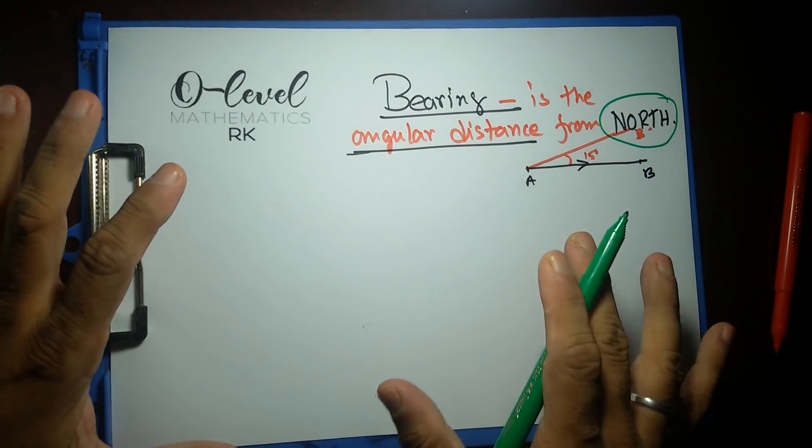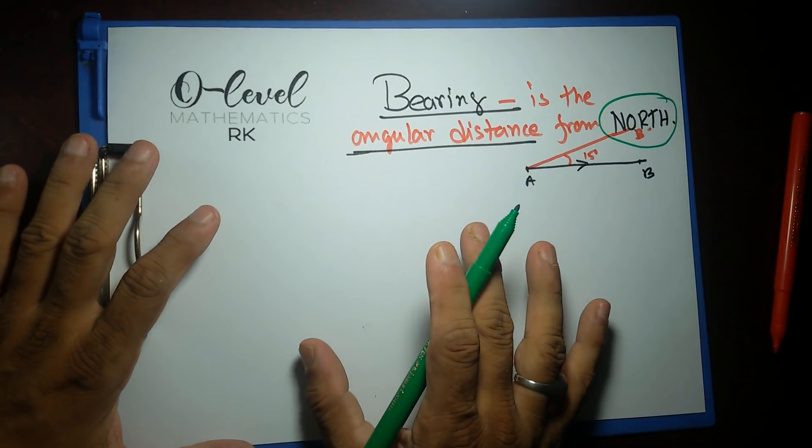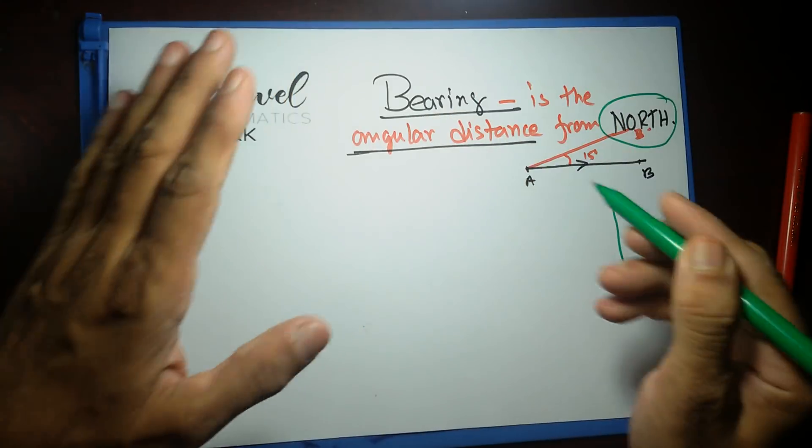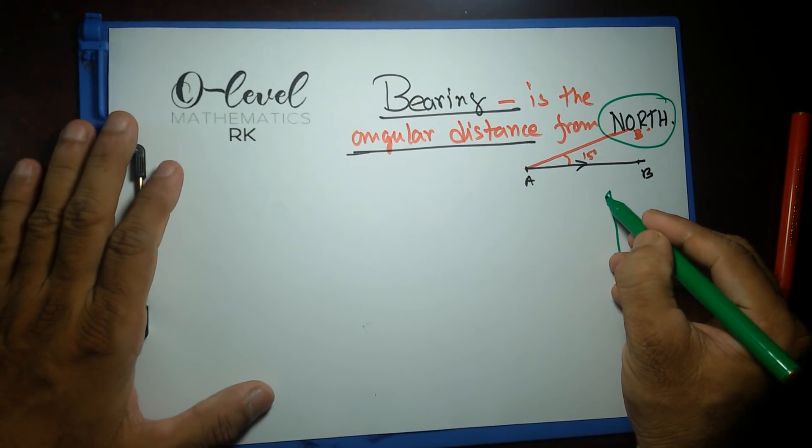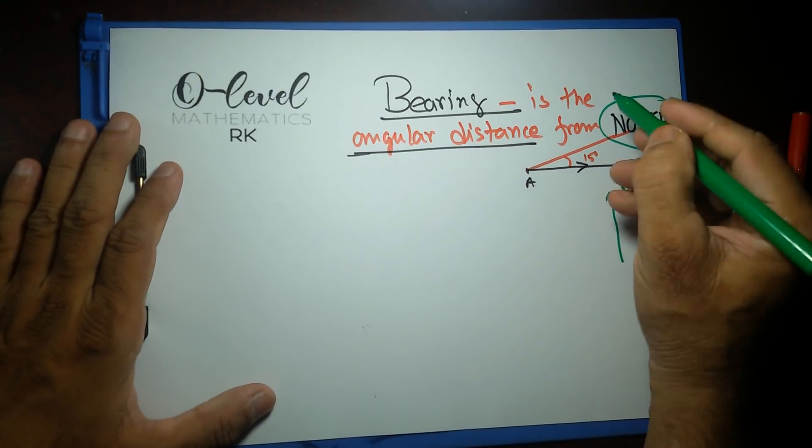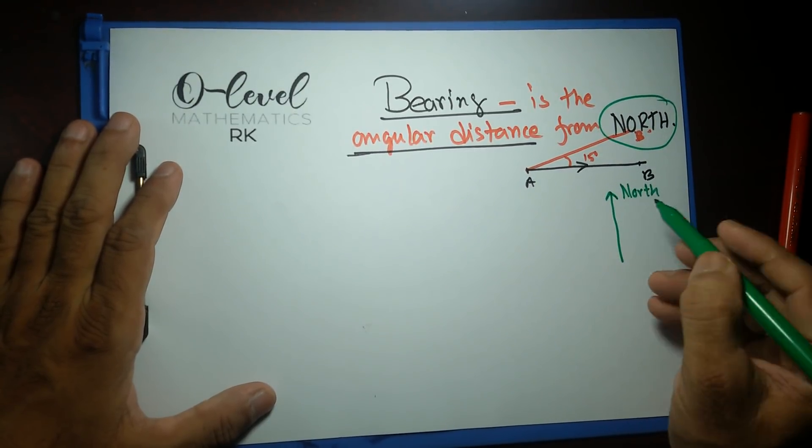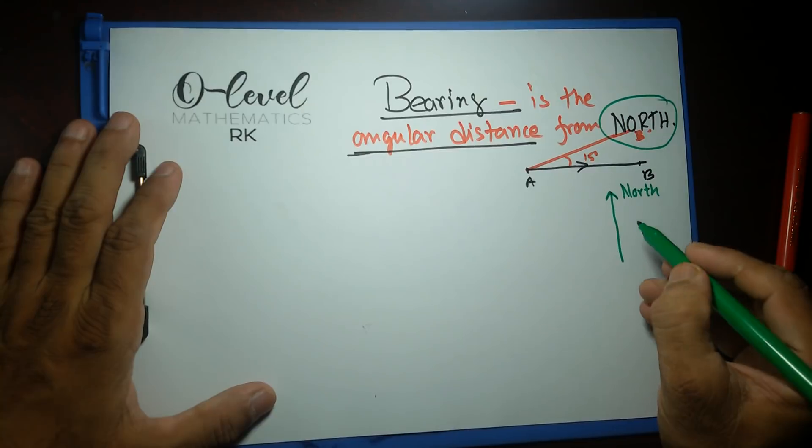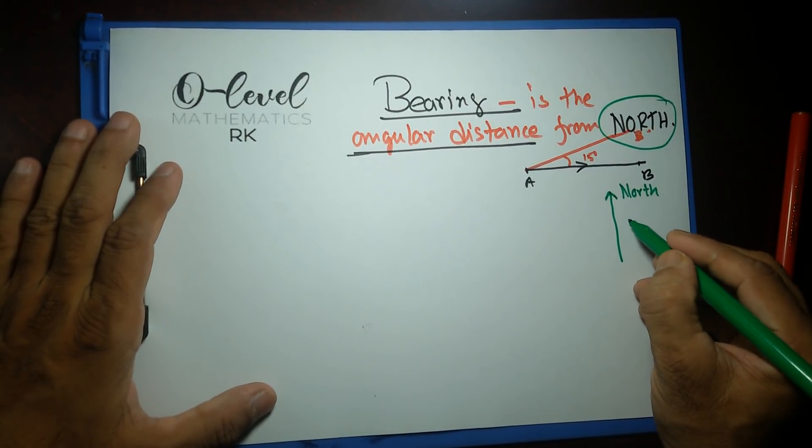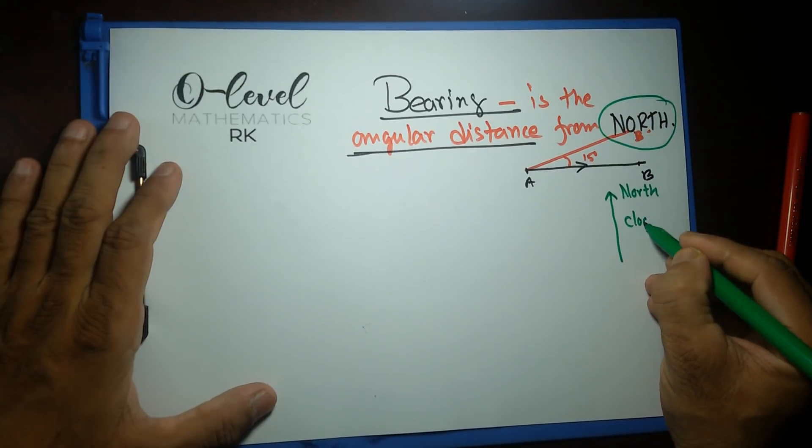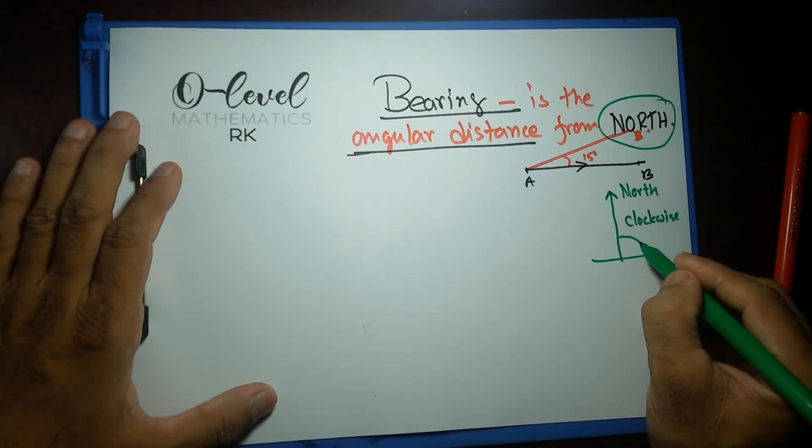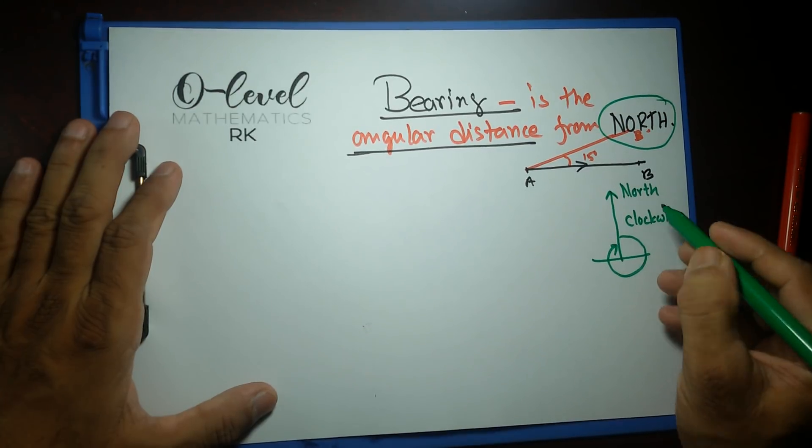But in our Maths B, all you need to remember is whatever your paper is, whichever way your paper is, the upside is always north. The upwards is always north. So the distance from north, and this distance has to be clockwise. It should be this way all the way around. That's our bearing.